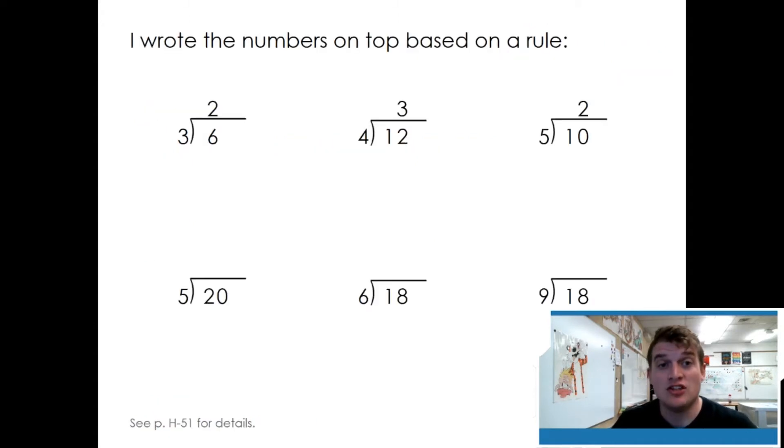I wrote the numbers on top based on a rule. First I would check addition. Can I get the top number through adding? No. I might be able to get it through subtraction. Six minus three equals, no it equals three, it doesn't equal two.